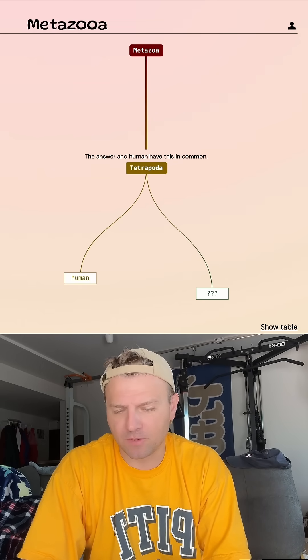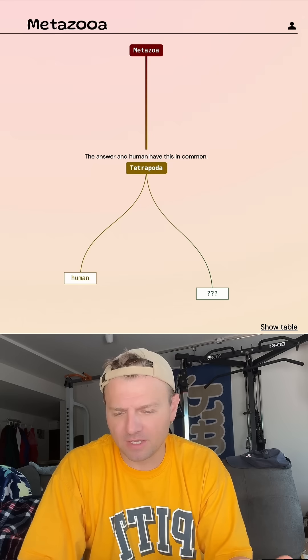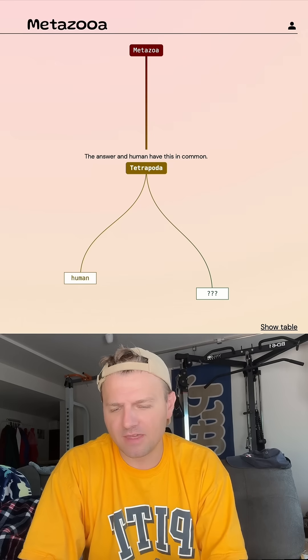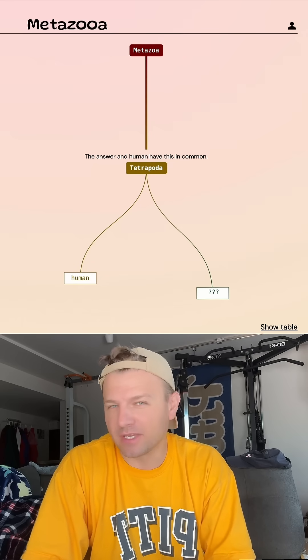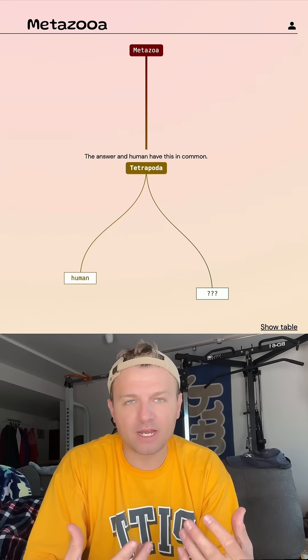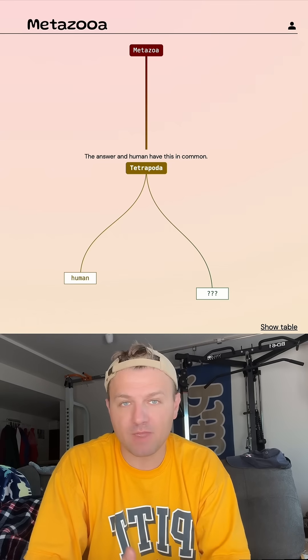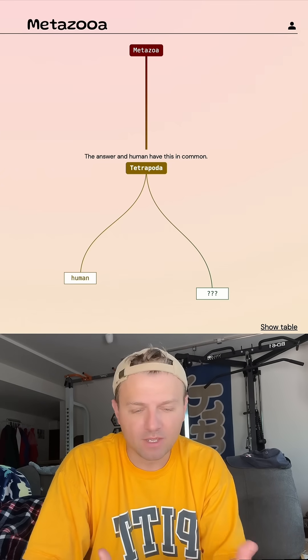So the grouping today is tetrapod, which just means it has four limbs, it's a vertebrate. That's interesting though, because I usually don't get tetrapod. In my brain, I'm thinking it's not a mammal, because if it was a mammal, it would be further down that list.